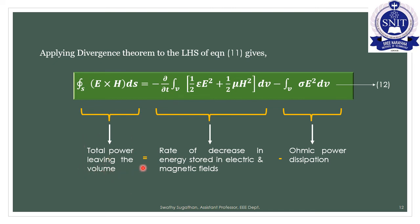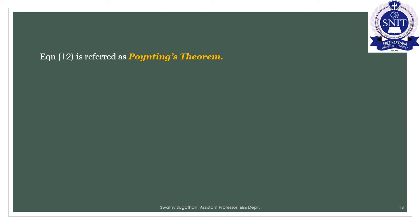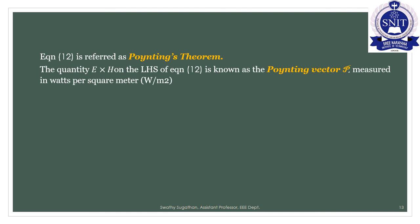The total power leaving a volume equals the rate of decrease in energy stored in electric and magnetic fields minus the ohmic power dissipation. This equation 12 is referred to as Poynting's theorem.